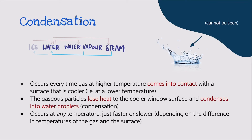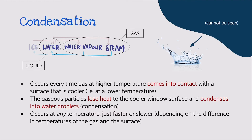Finally, condensation is a change of state of water from water vapour, which is gas, to liquid water. When you exhale into a mirror, notice that the mirror turns foggy. When you touch the foggy mirror with your finger, the surface of the mirror feels wet — this is because condensation has occurred. Condensation occurs every time gas at a higher temperature comes into contact with a surface that is cooler. In the previous example, the air you breathe out is at the higher body temperature of 37 degrees Celsius, while the surface of the mirror is at a much cooler temperature of about 27 degrees Celsius at room temperature.